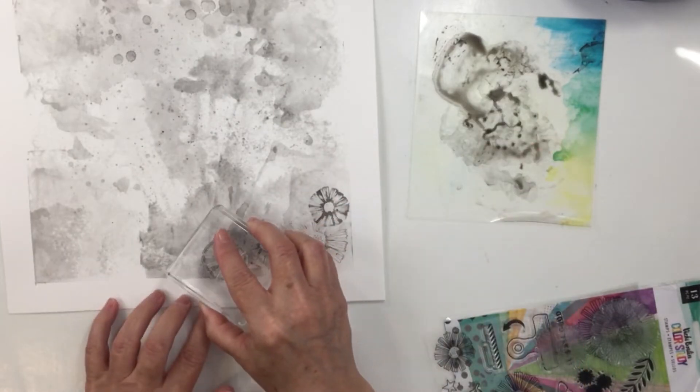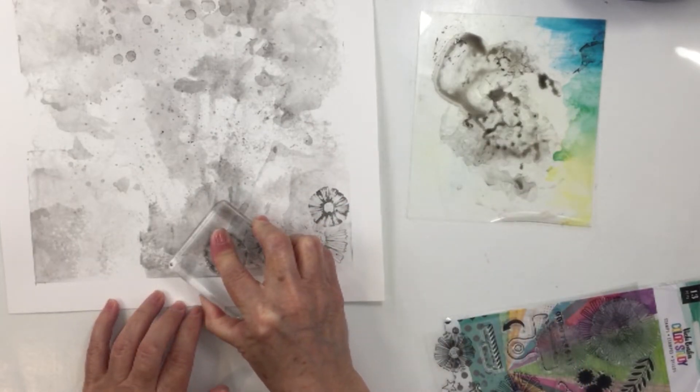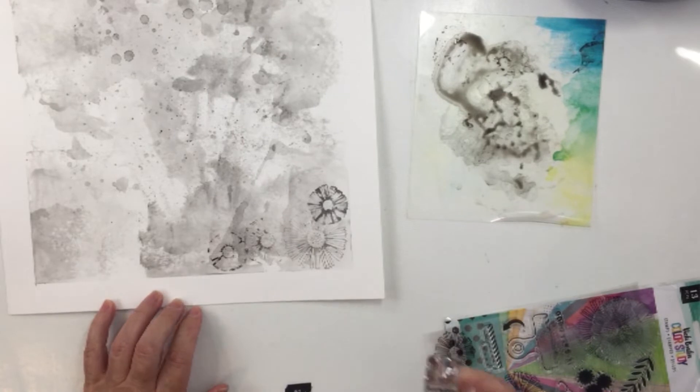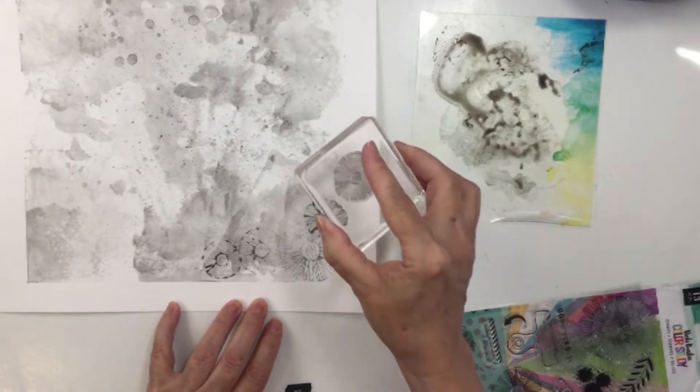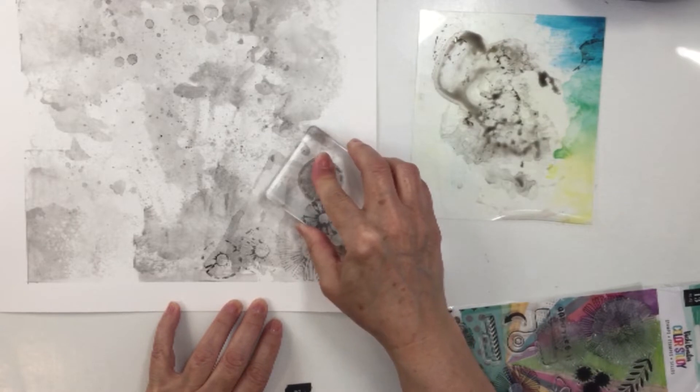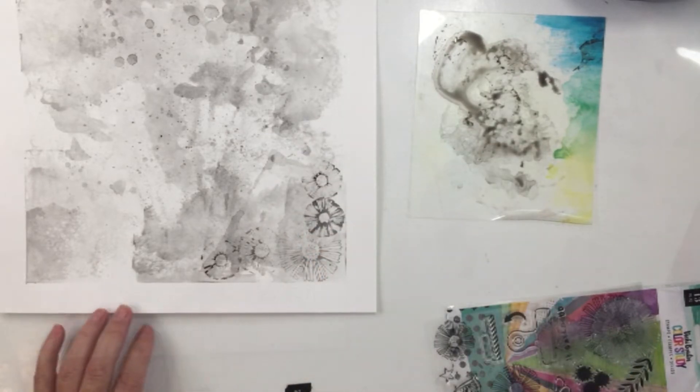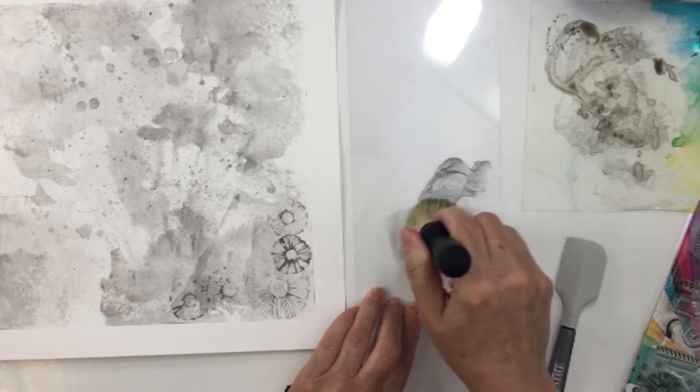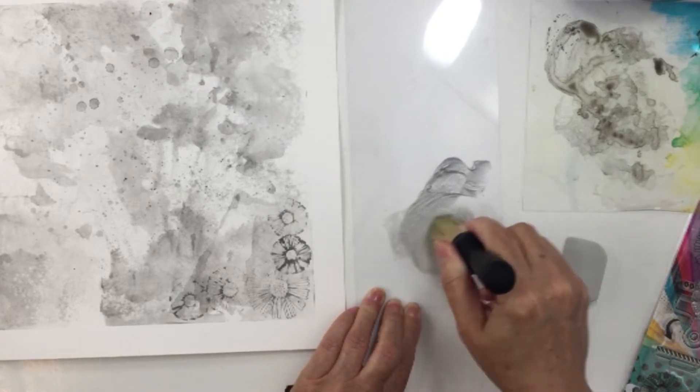Once those are all dry I will be ready to move on to my next step. I'm going to add those to the bottom right corner of my project and the top left corner. So you'll just see me stamping that out and I do the exact same thing to the other corner.